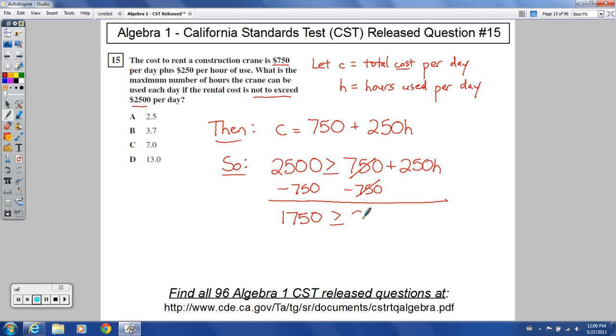And that would be $250 times H still here. If I divide both parts by $250, the $250 here will cancel. I would have 1750 divided by 250 is greater than or equal to H.